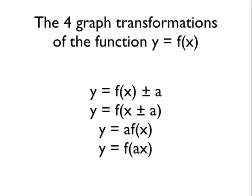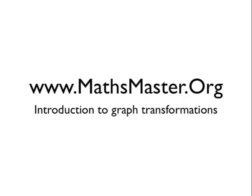So that's the basics of graph transformations. We take a function of x — y equals f(x) — and we can do four different things to it. What happens to the graph when we do each of those four things is the whole topic. Importantly, whilst we've used simple functions like x squared here, this works for all functions of x — even something like 2x³ minus 2x² plus 3x minus 5. The principles you'll learn here apply equally to any function of x. That was Introduction to Graph Transformations. If you want to see more great maths videos, please visit MathsMaster.org.